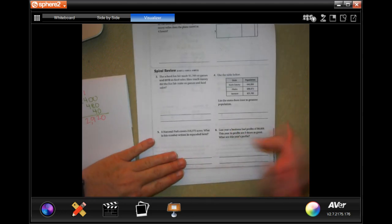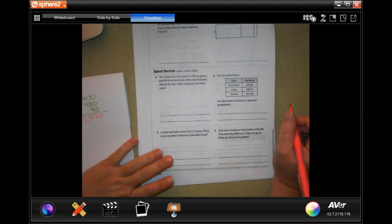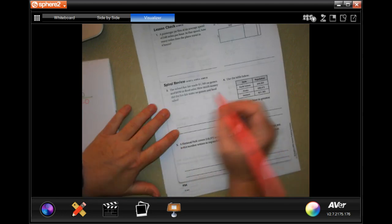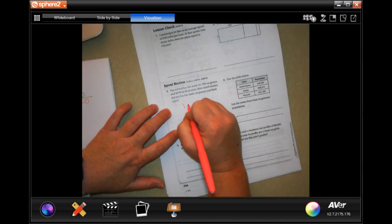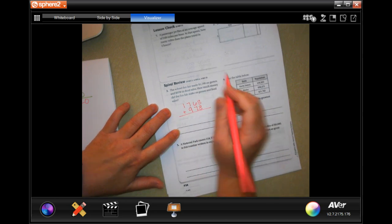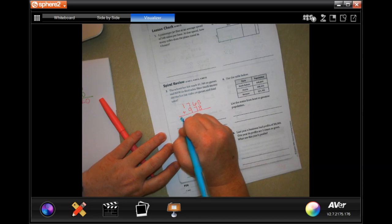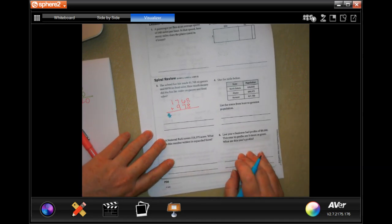So the school fun fair made $1,768 on games and $978 on food. How much money did the fun fair make on games and food sales? Well, that's going to be easy because all we have to do is add them up. So 1, 7, 6, 8, and 9, 7, 8. We're going to add them up. Whatever our answer is, it's definitely going to have a dollar sign in front of it. That is our label.